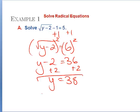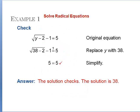We want to check to make sure this works. We substitute 38 in: 38 minus 2 gives us 36. We take the square root — that's 6. Minus 1 gives us 5. So it is a working solution.